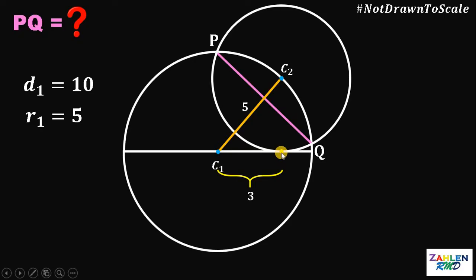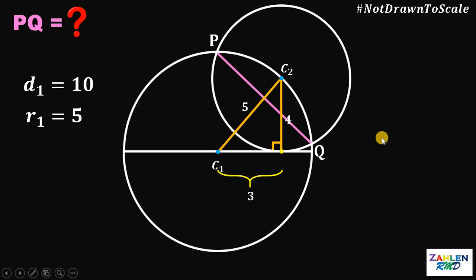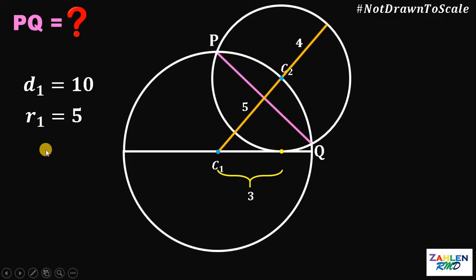From the point of tangency, let's draw the radius of the small circle. Take note that this radius is perpendicular to the diameter of the big circle, because the diameter is tangent to the small circle. Notice this right triangle: the hypotenuse is 5, one leg is 3, therefore the other leg measures 4 units. This is the special 3-4-5 right triangle, and this 4 units is also the length of the radius of the small circle.